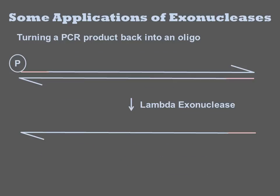In a more modern example, you can use an exonuclease to convert a PCR product back into a single-stranded oligo. A 5' phosphate is added to just one of the two oligos used for PCR. The resulting PCR products incorporate the oligos, shown in pink, into the final molecule. Upon treatment with lambda-exo, which requires a 5' phosphate for initiation, only the strand with the 5' phosphate is degraded, leaving behind a gene-length single-stranded DNA.